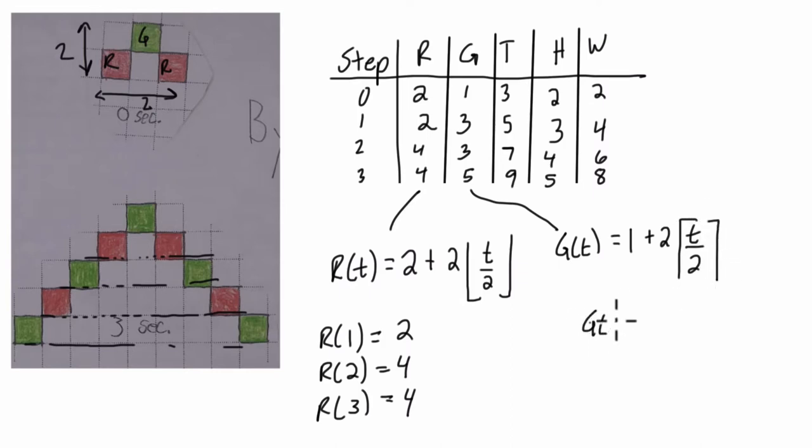If we plug in g of zero, we should get one. If I plug in zero, zero divided by two is zero, times two is zero, plus one is one. It gets us one pixel, which is correct. At the first second, though, we should get three. So one divided by two is a half. A half rounded up is one. One times two is two, plus one is three. Yay, it works.